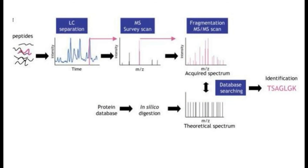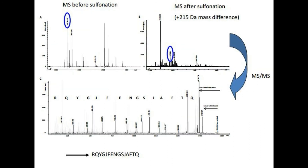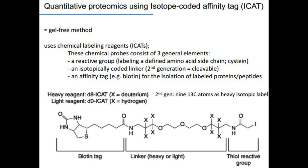We can also try to find out the effect of reactions on certain amino acids using de novo sequencing. For example, focusing on a reaction like sulfonation, we take a mass spectrometry result before and after applying the sulfonation technique and observe the typical mass differences per peak. If we observe a certain mass difference, we know that the sulfonation has interacted with those particular amino acid residues or polypeptides.